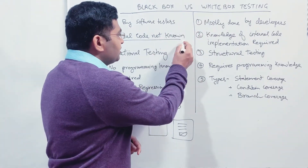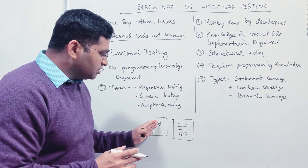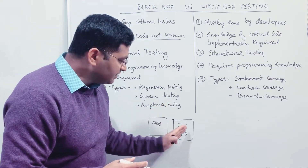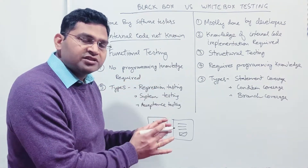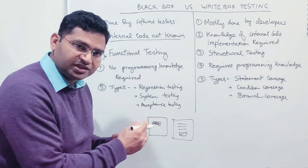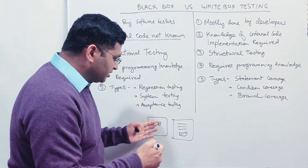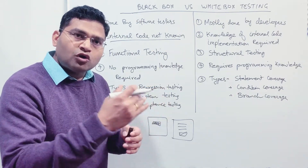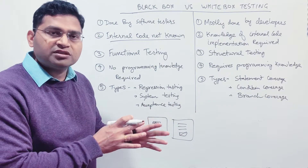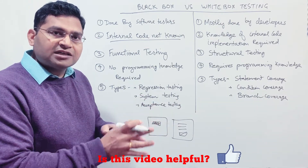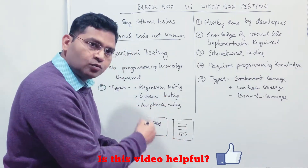In white box testing, in the same case, knowledge of internal code implementation is required. Your testing will not be limited to just clicking on the link and verifying that the page opens successfully. In white box testing, the testing will actually be around the coverage of the code written to implement this functionality. Once this register link is invoked, you will verify what methods are being called and whether all the test cases cover the permutation combinations — statement coverage, condition coverage, or loop coverage. That is why knowledge of the internal code implementation is required.